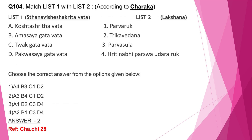Question number 104: A — in Koshtha Shrita Vata there is Parva Shula; B — in Amasaya Gata Vata there is Hrit, Nabhi, Parsha, Udara Ruk; C — in Twak Gata Vata there is Parva Ruk; D — in Pakwashaya Gata Vata there is Trika Vedana. The correct answer is option 2. Earlier we had a question on Ashaya Gata Vata Chikitsa from Sushruta Samhita; here it is Ashaya Gata Vata Lakshana from Charaka Samhita. Concentrate on these from Charaka, Sushruta, and Ashtanga Hrudaya. Note that options like Parva Ruk and Parva Shula are very similar, so be specific while learning.